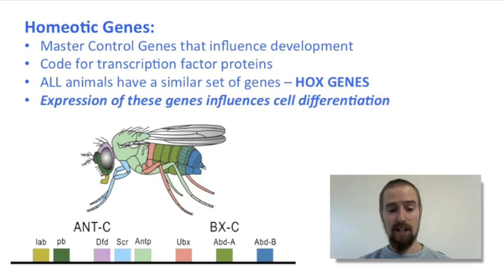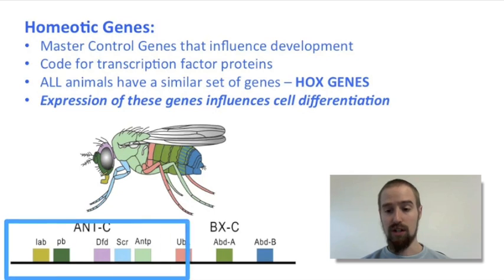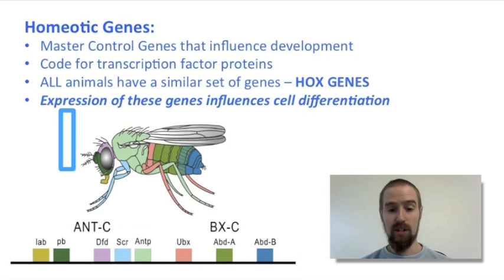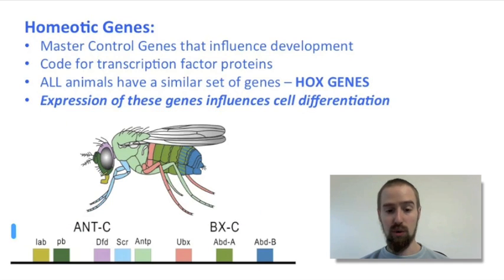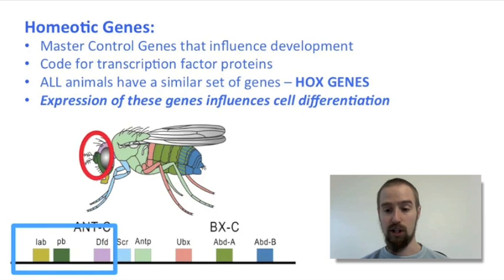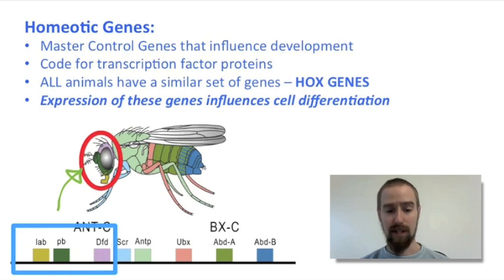In this part of our diagram, the color-coded bars represent the different hox genes found in a fruit fly. In this part of our diagram, we see where in the body these different genes are being expressed. For example, we see that these three hox genes are expressed in the fruit fly's head region, and the expression of these genes is what causes the cells in this region to differentiate and develop into the cells that make up the fly's head, and not its legs or its wings or something like that.